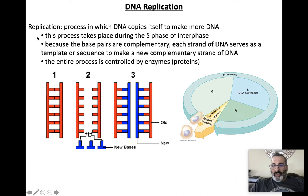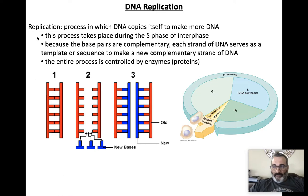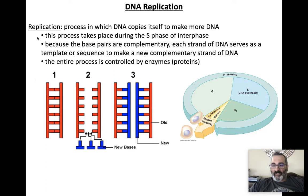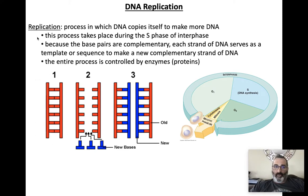Replication is when DNA copies itself, and it's really important to understand because mutations generally happen during replication when DNA is getting copied. Something goes wrong, and the wrong letter gets placed — A, C, T, G — something gets flip-flopped, reversed, deleted, or added, and now we have a change in our DNA, which could potentially be a problem.